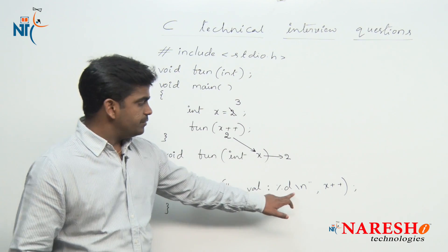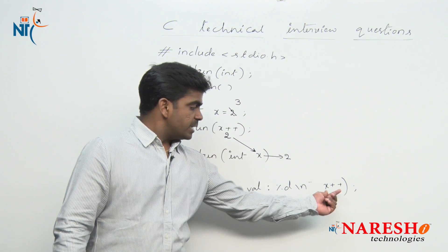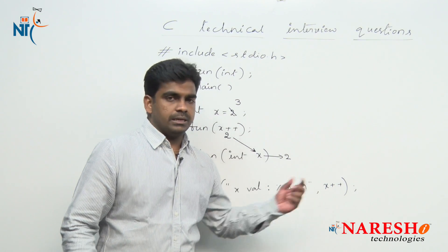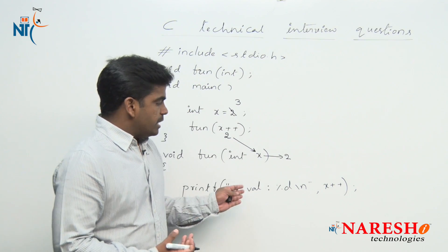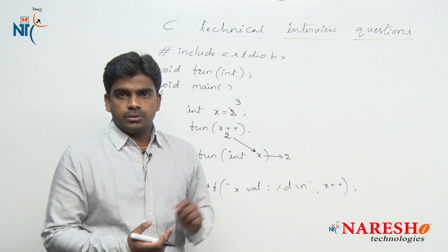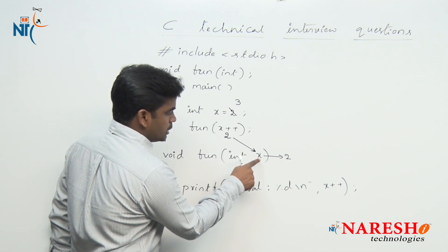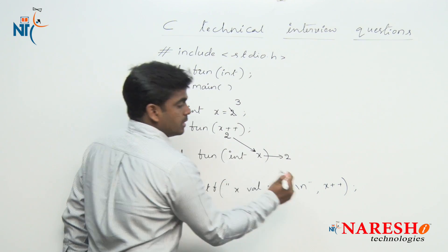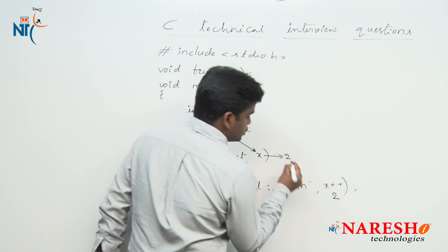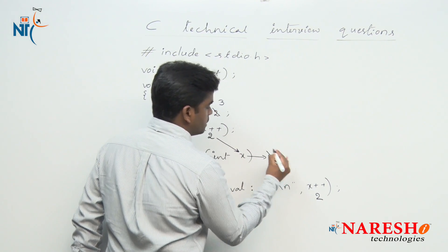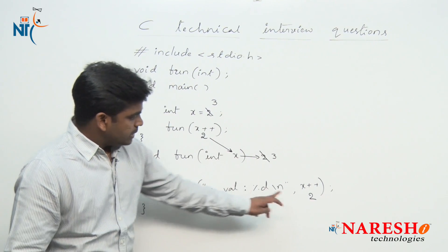Inside the fun function, we are printing that x value, but directly we are not printing x value. We are printing x++ value. Again here also we are using post-incremented value. The post-increment means here local variable is x. It will substitute the value is 2, next the value becomes 3.